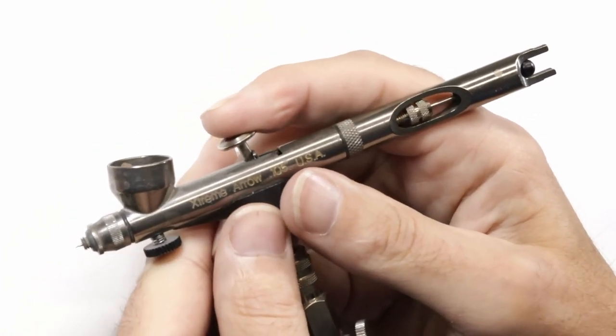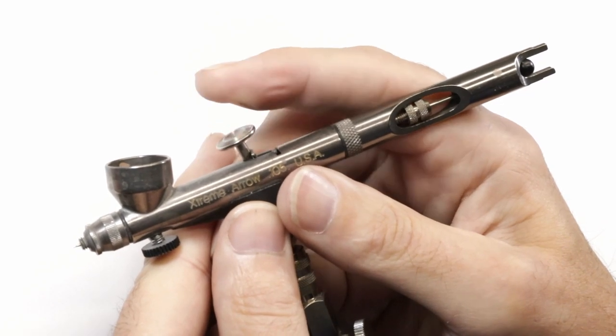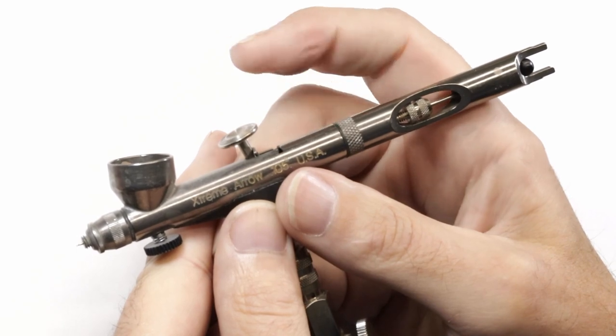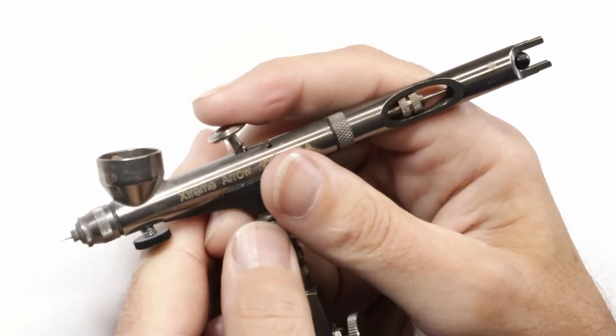With an airbrush, usually your airbrushes are all double action now, which means you push down for air and then pull back for paint. The farther back you pull, the more paint you get.